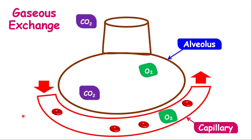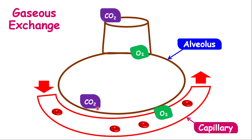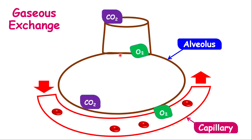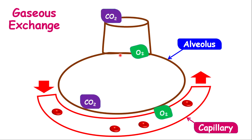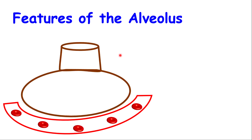Gaseous exchange is the process by which one gas replaces another gas. Inside the alveolus, oxygen enters and diffuses across the walls of the alveolus into the capillary. At the other end, carbon dioxide diffuses out of the capillary into the alveolus, and then diffuses out through the nasal cavity. So you can notice the flow of gases — oxygen going in, carbon dioxide coming out.